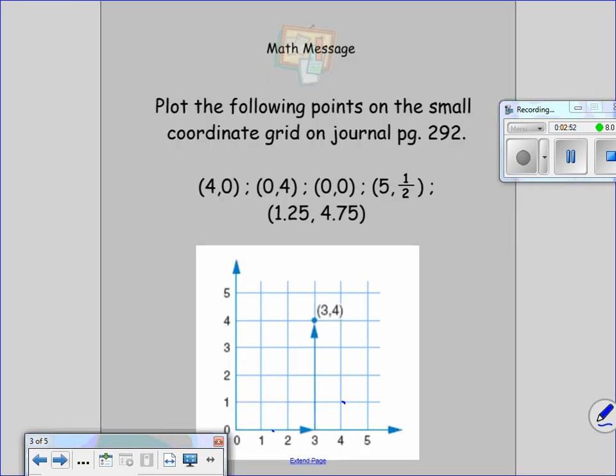We have some more numbers here. This isn't going to make a shape, but we're just going to plot them just for some extra practice. So please follow along. The first one, we have 4, 0. So we go over 4, up 0. That means it's right there on the line. We go over 0, up 4. That's where this plot's at. The 0, 0 is going to be right here in the corner.